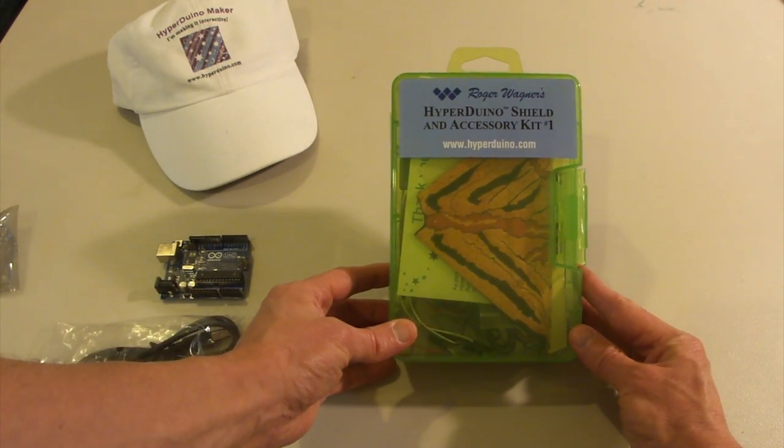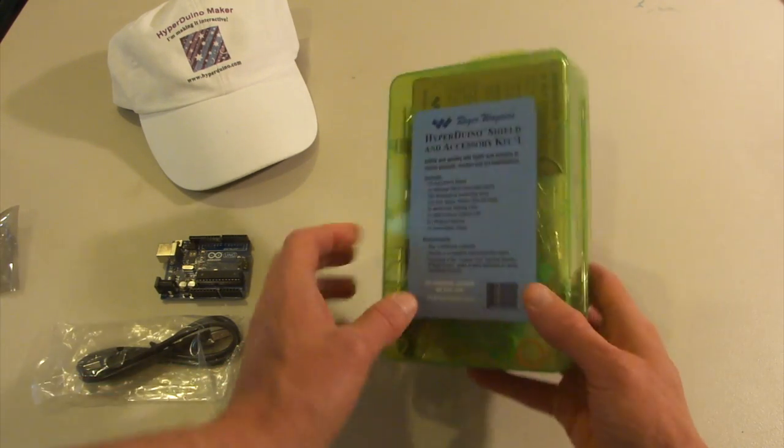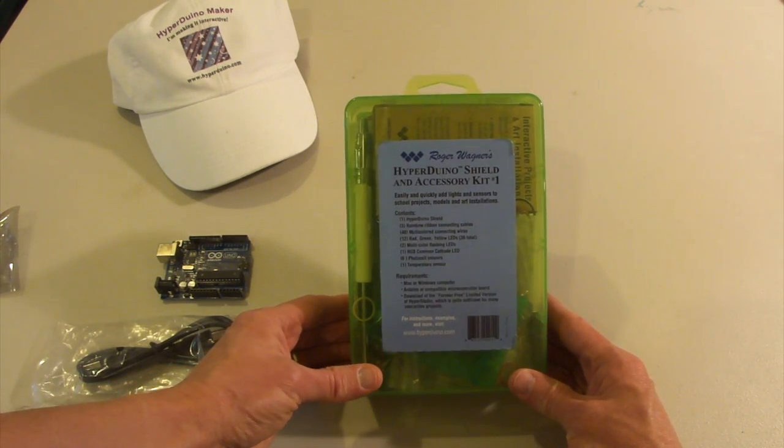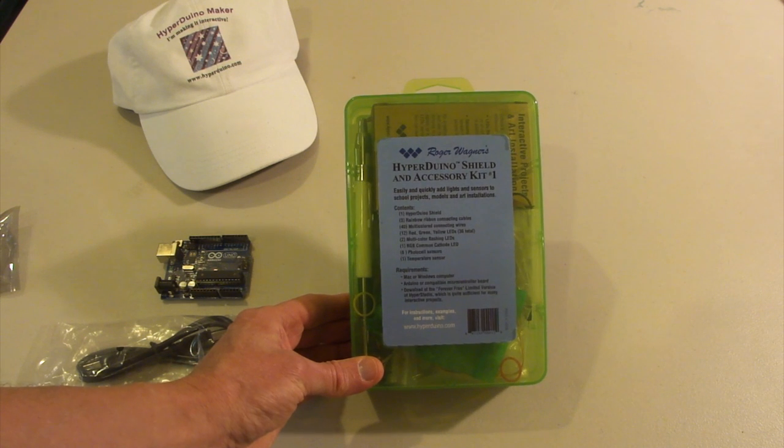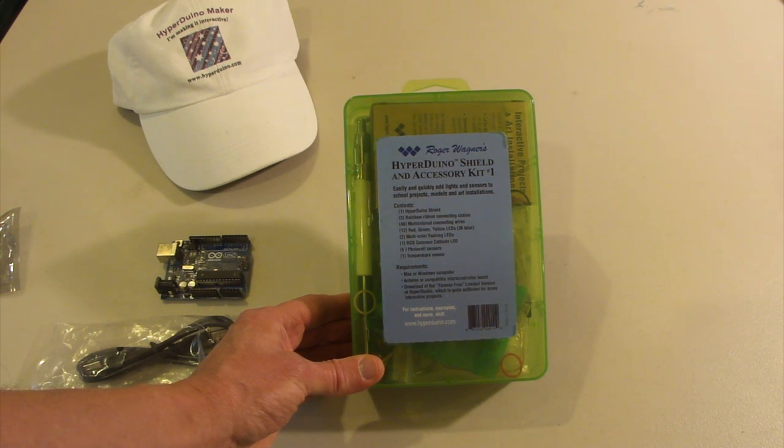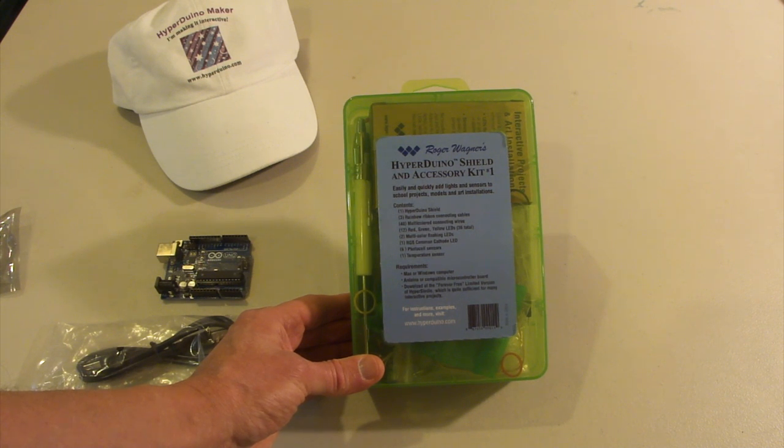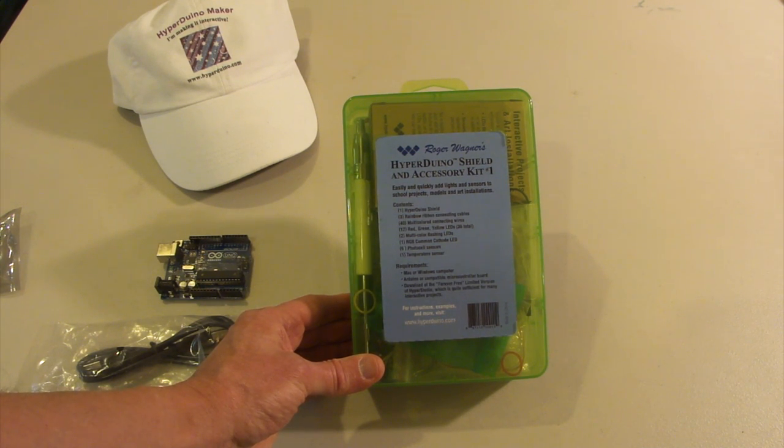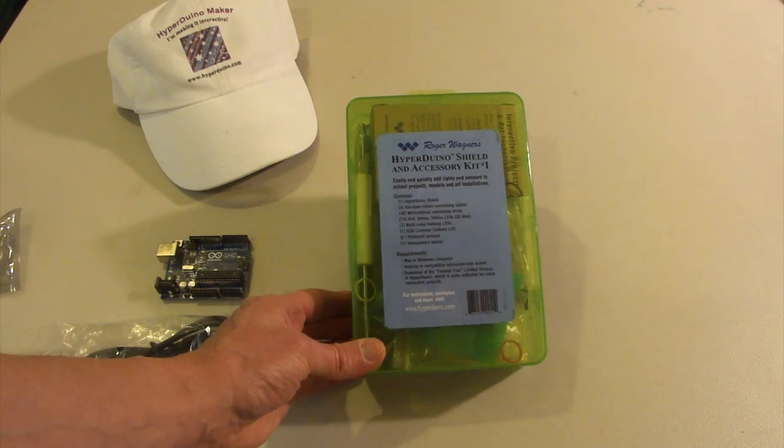So here's the Hyperduino shield kit. It's a kit that comes with lights and sensors and it's designed to be hooked up to the Arduino to be used for adding things like lights and sensors and motors to school projects or models or maybe like an art installation or something like that.